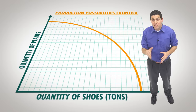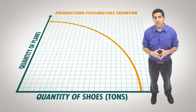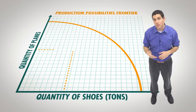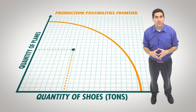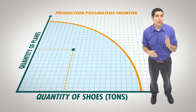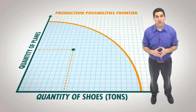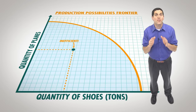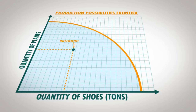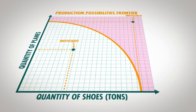What if American companies mismanaged their resources and tried to produce planes and shoe factories and shoes and plane factories? Well, they'd be at a point inside the Production Possibilities Frontier, showing an inefficient use of resources. So every possible combination inside the curve is inefficient, on the curve is efficient, and outside the curve is impossible.